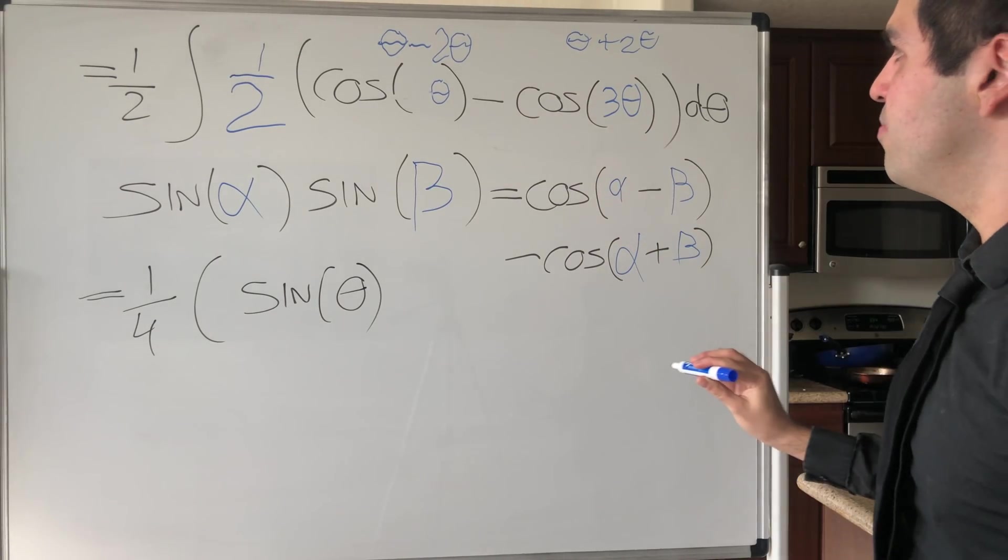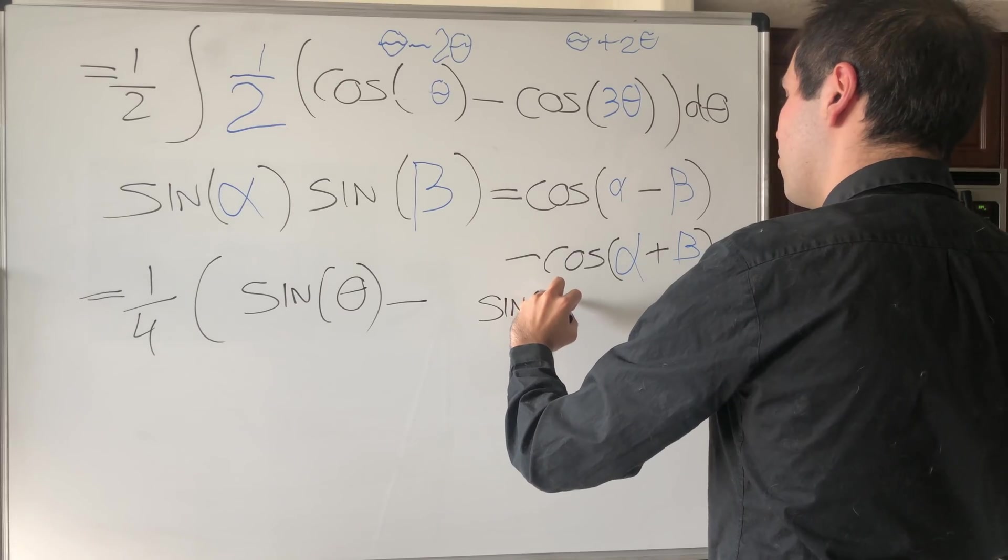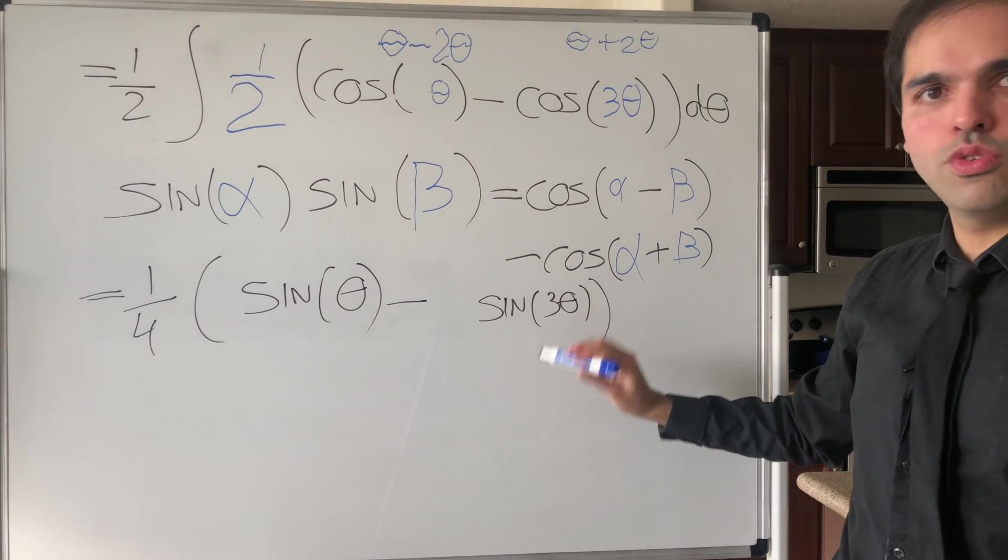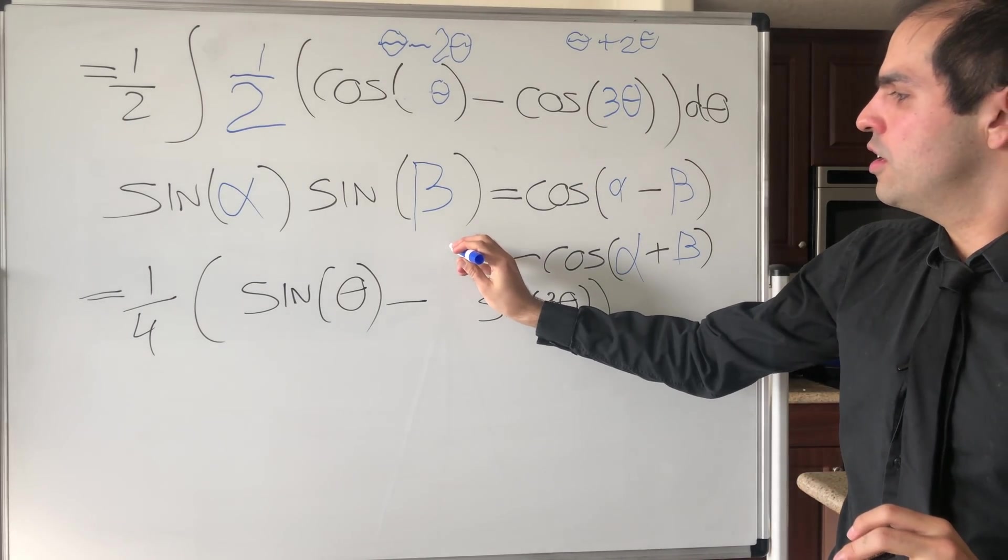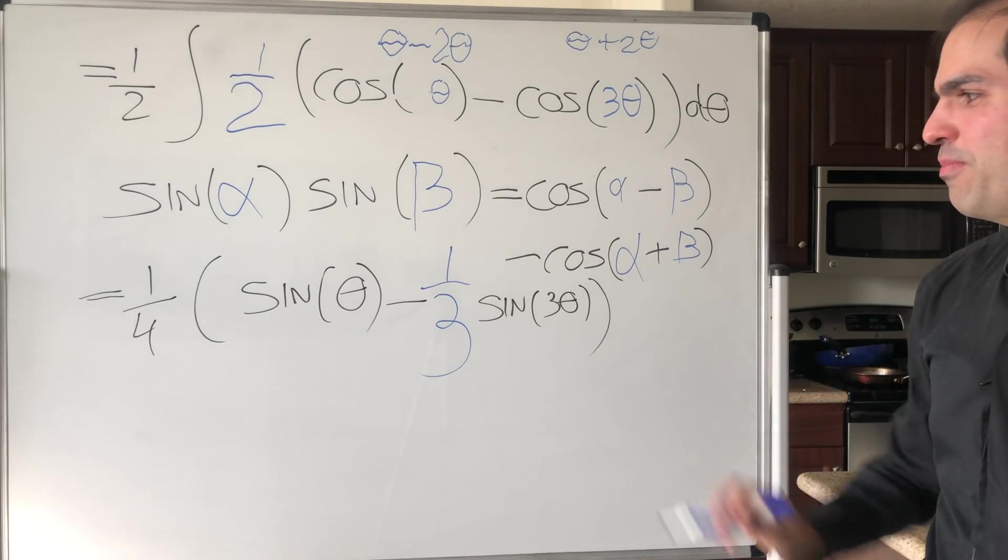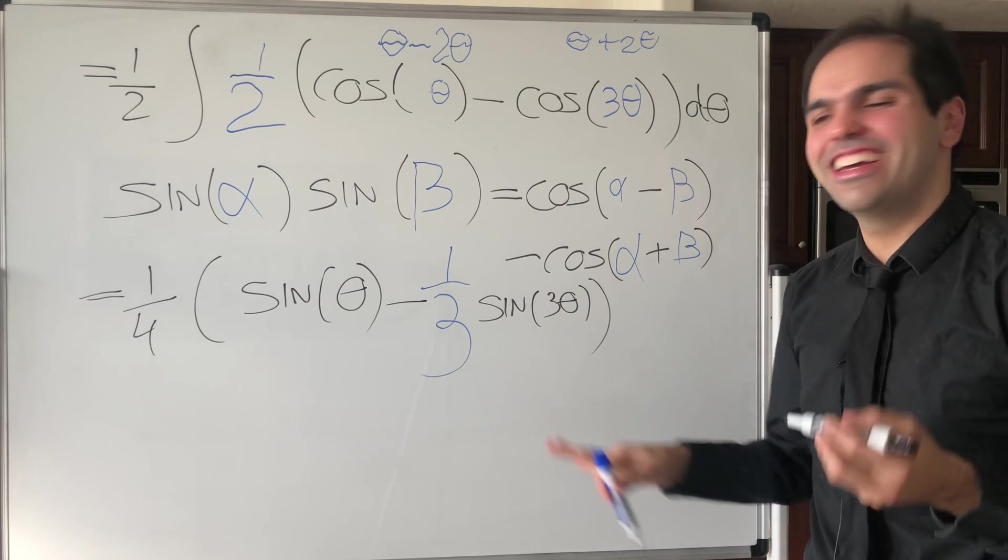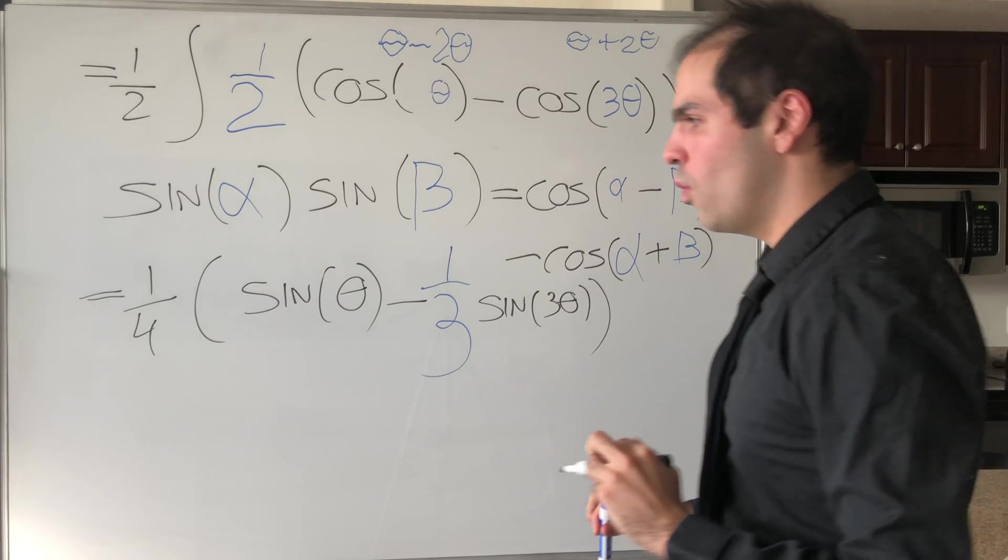And then here we want to say minus sine of three theta. However, remember, you have to use a reverse chain rule, because if you integrate this, you have this one third that pops out again. I think it looks more elegant on this channel, but then what we get is one quarter.